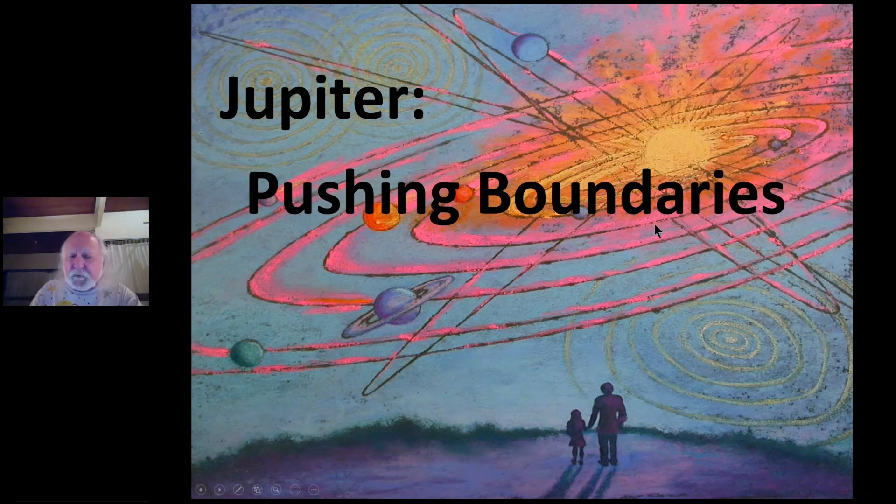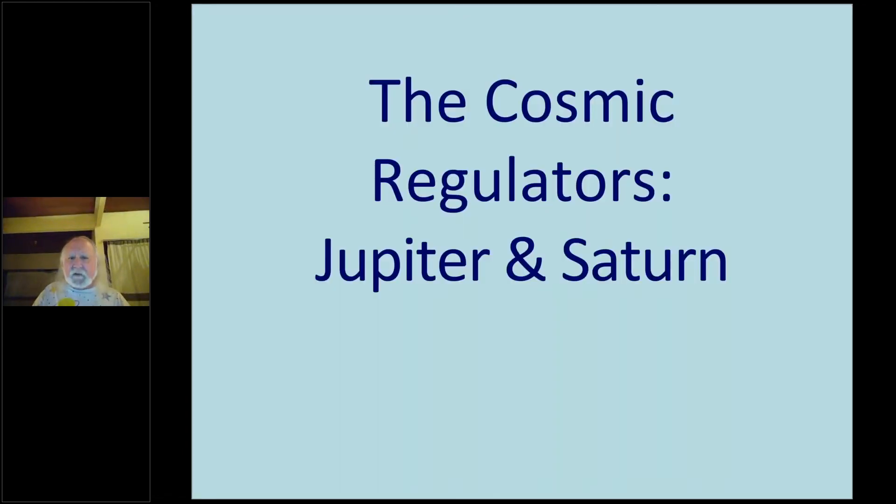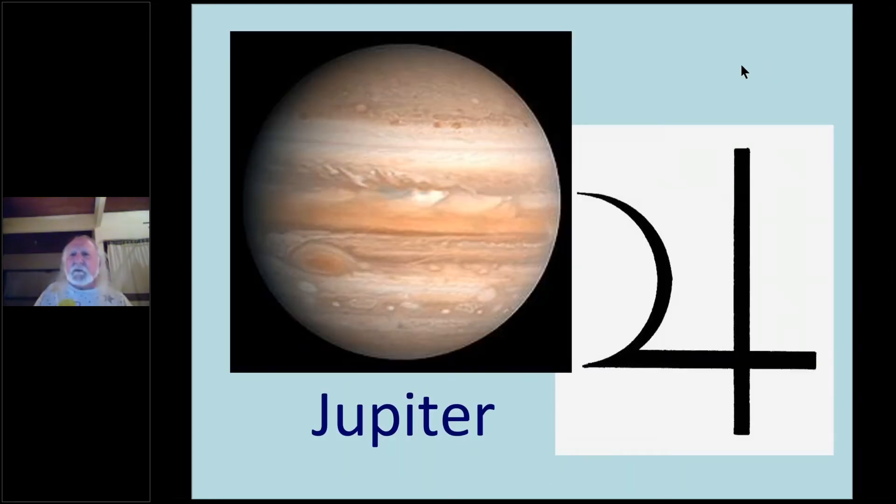Jupiter's job is to take all of our personal energy, our sun, Mercury, Venus, and Mars, and to extend it into social realms. Jupiter basically is part of a team of Jupiter and Saturn that become the cosmic regulators. In fact, the symbol of Jupiter is the waxing moon rising in the east over the cross of the material universe.